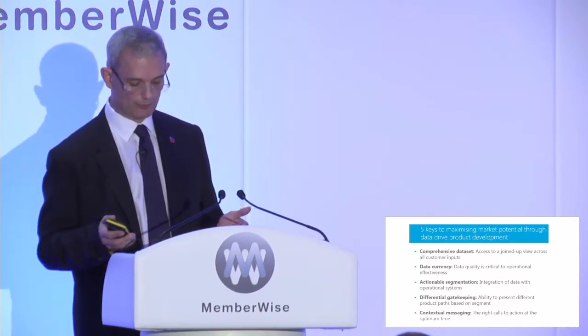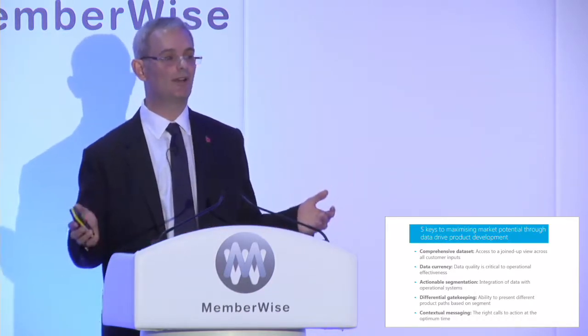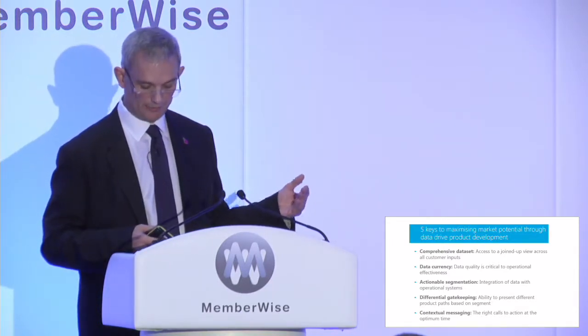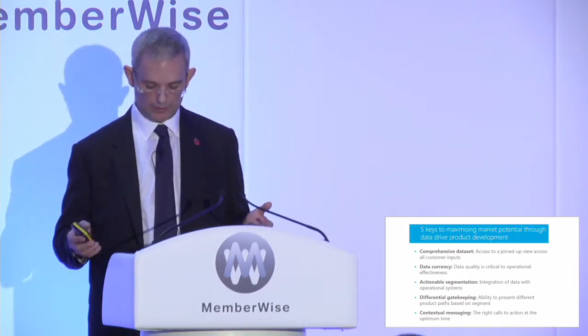In summary, there are five key points to delivering data-driven product development. First, make sure you've got access to all of your data — that doesn't necessarily imply a massive data warehouse, but rather think about how your various systems work together and can exchange data with some way of viewing the result holistically. Second, ensure your data is kept fresh — you can't base product development decisions on out-of-date data. Third, make sure you've got a means to act on that data segmentation in real time, so that it relates to your operational systems.